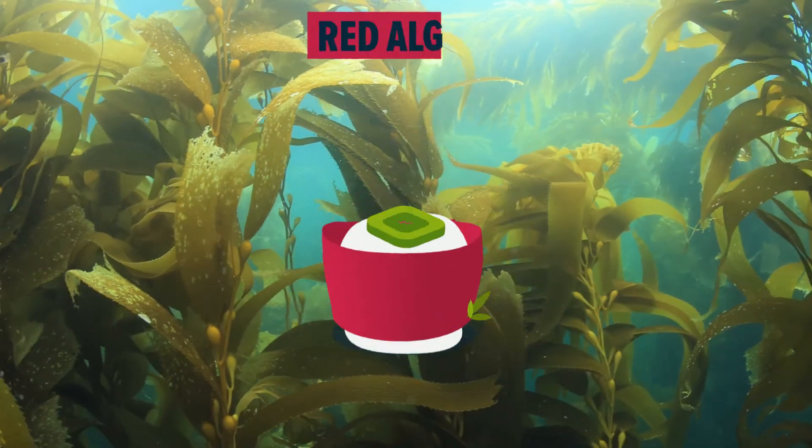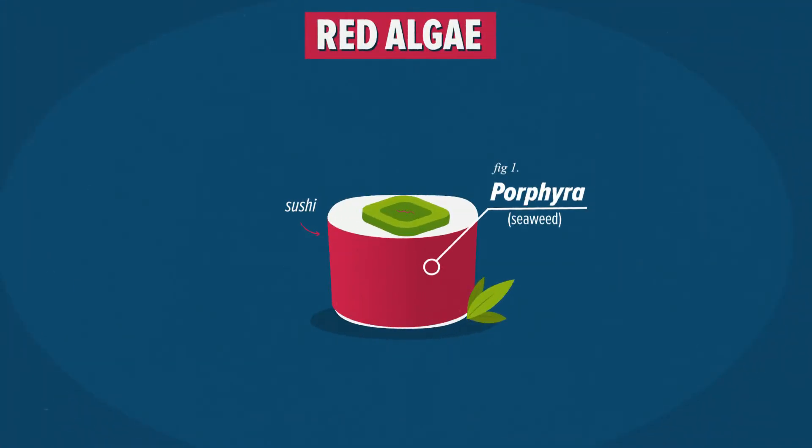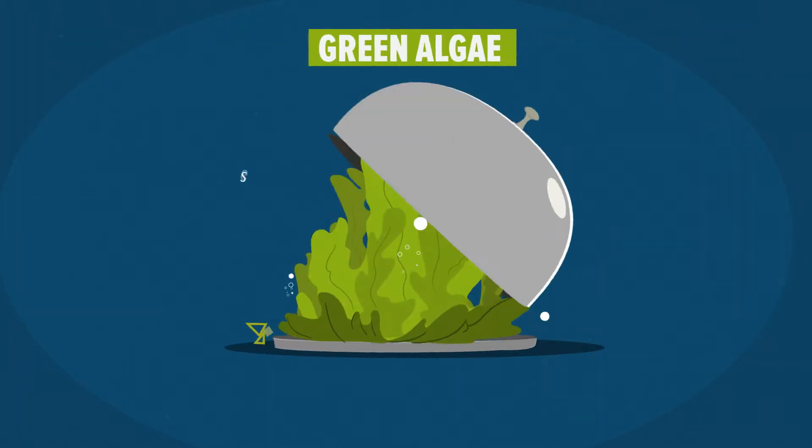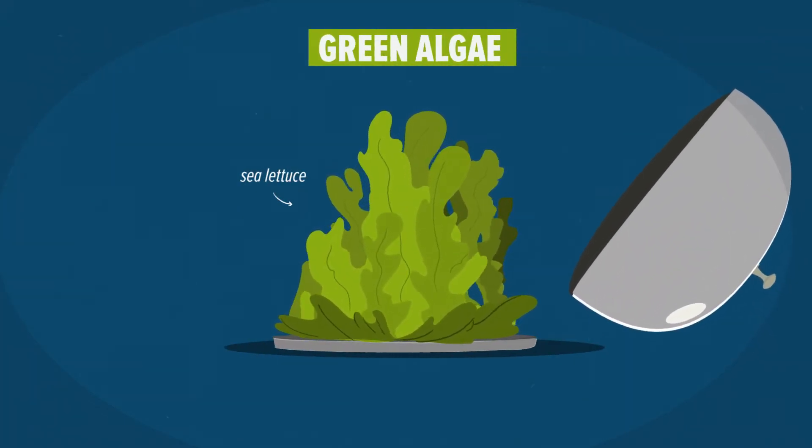Did you know that some parts of sushi are also made of algae? Famous green algae, such as sea lettuce, are a healthy alternative to regular vegetables.